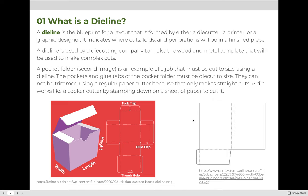So what is a die line? A die line is the blueprint for a layout that is formed by either a die cutter, a printer, or a graphic designer. It indicates where cuts, folds, and perforations will be in a finished design. A die line is used by a die cutting company to make the wood and metal template that will be used to make complex cuts.